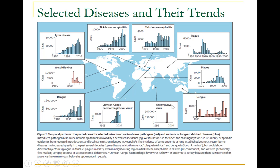In 1999, the New York City Department of Health reported a cluster of patients with meningoencephalitis associated with muscle weakness. Epidemiological evidence suggested that an arbovirus was the probable cause. Clinicians and veterinarians collaborated to identify the agent as West Nile virus. Unfortunately, identification and initial control efforts did not prevent the virus from spreading from the east to the west coast of North America within only four years.